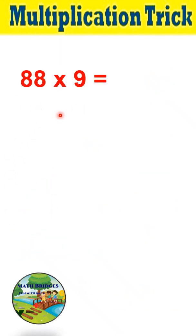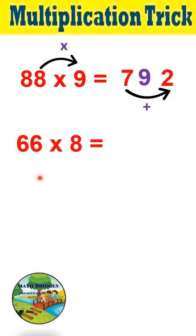Now 88 times 9. First step: 8 times 9 is 72. 7 plus 2 is 9. So by practice, you can directly write the answer. Next, 66 times 8: 6 times 8 is 48. Now we will add these two digits.